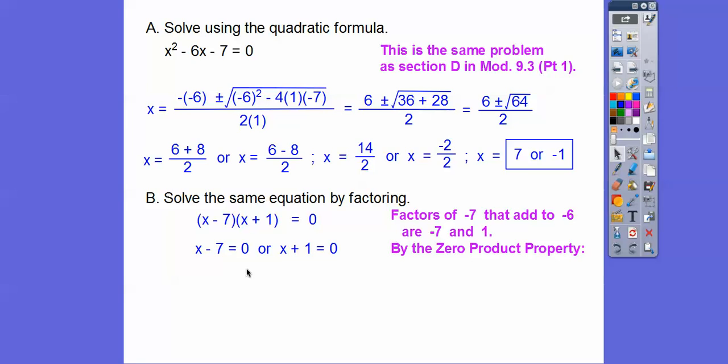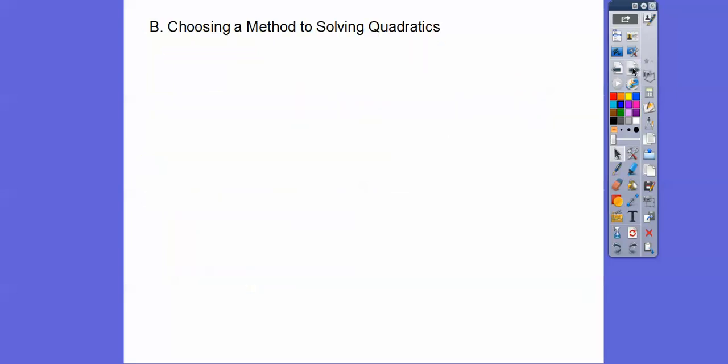So when you set them equal to 0, so then plus 7, plus 7, minus 1, minus 1, and then you get the same answer. Factoring is way faster, more efficient if you can factor. In fact, I wouldn't use the quadratic formula unless you had to. So here's the methods I would choose, you guys.